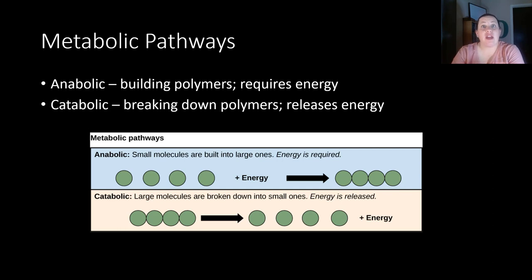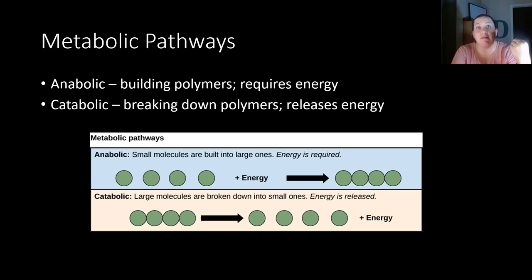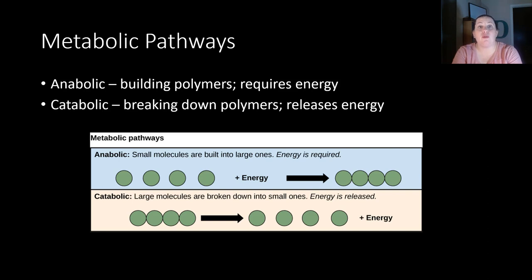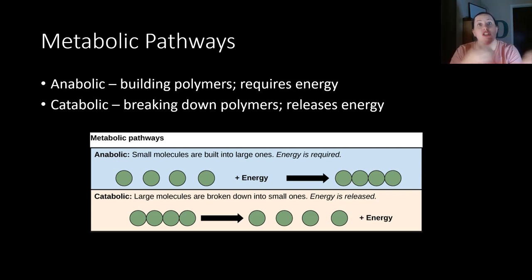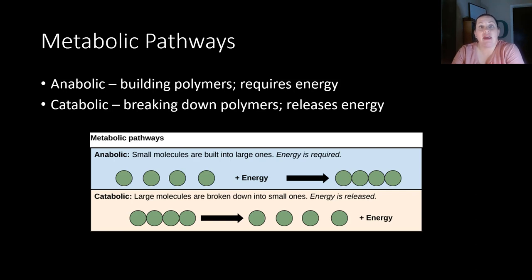With these metabolic pathways, there are two different ways metabolism can happen — building up or tearing down. Anabolic reactions involve the building of polymers, and this requires energy. Anytime you build something, energy is required. Catabolic reactions, on the other hand, involve breaking polymers into smaller parts, releasing energy in the process. So you have anabolic and catabolic — one builds, one breaks apart.